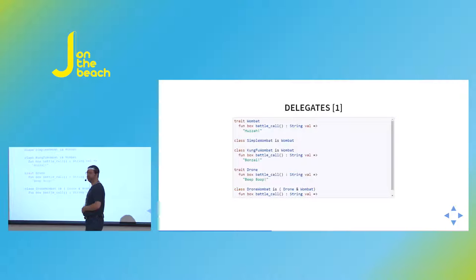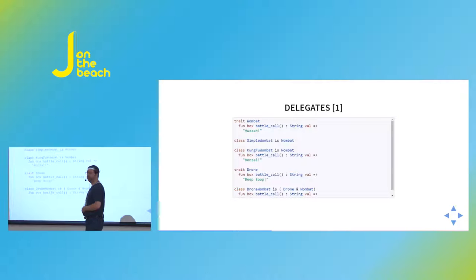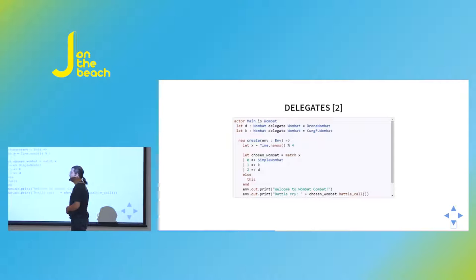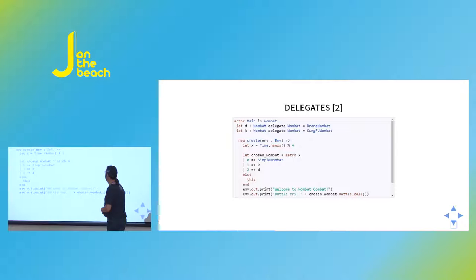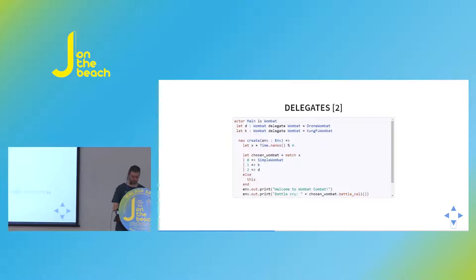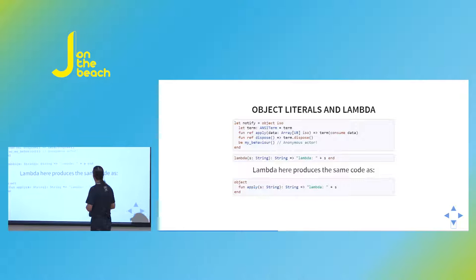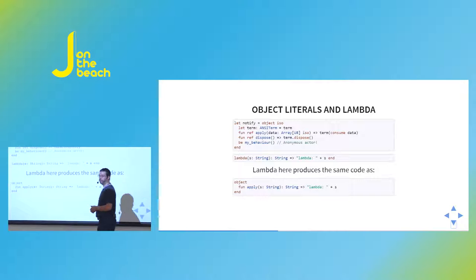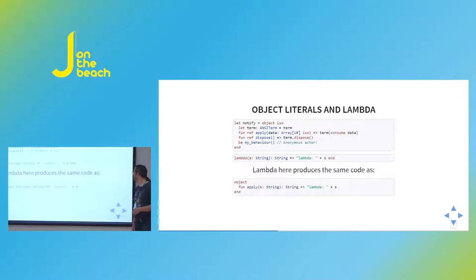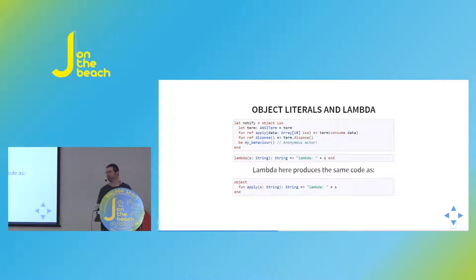Pony has delegates — a kind of mixin. You define a bunch of different implementations and can assign various ones based on runtime state or context. For example, a drone wombat or a kung-fu wombat assigned depending on some runtime value. We also have lambda operations and object literals — these simply have an apply function. Anything with an apply can be called as a lambda, allowing you to pass around code in a reasonably generic way.